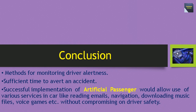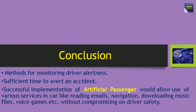In conclusion, the artificial passenger provides methods for monitoring driver alertness with sufficient time to avert an accident. Successful implementation would allow use of various services in the car — like reading emails, navigation, downloading music files, voice games, etc. — without compromising on driver safety. Artificial passenger is a great technology to have in our vehicles and a great way to prevent accidents by alerting the driver at the right time.